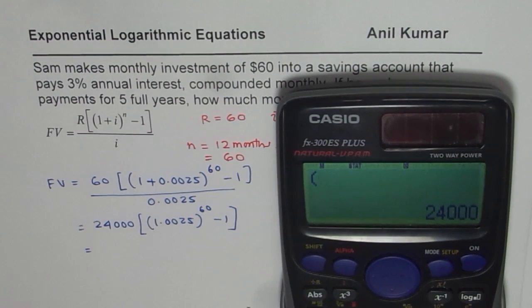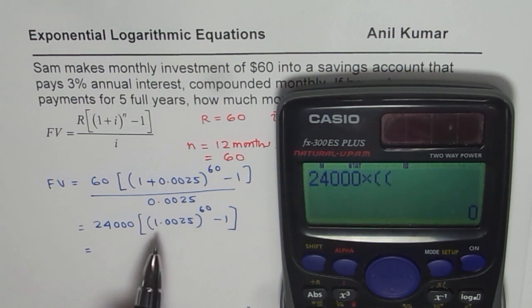That gives us 24,000 within brackets. We will do 1.0025, bracket close, exponent is 60 for us. Let us redo it. So it is 24,000, let us do everything together, times within brackets. Let us open two brackets since we have to do the exponent and then minus 1.